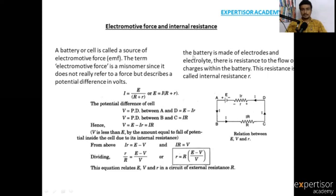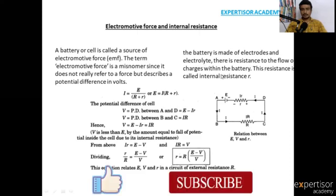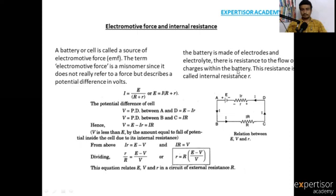Coming to internal resistance: a battery is made of electrodes and electrolytes. There is a resistance to the flow of charges within the battery. This inside resistance of the battery is called internal resistance.